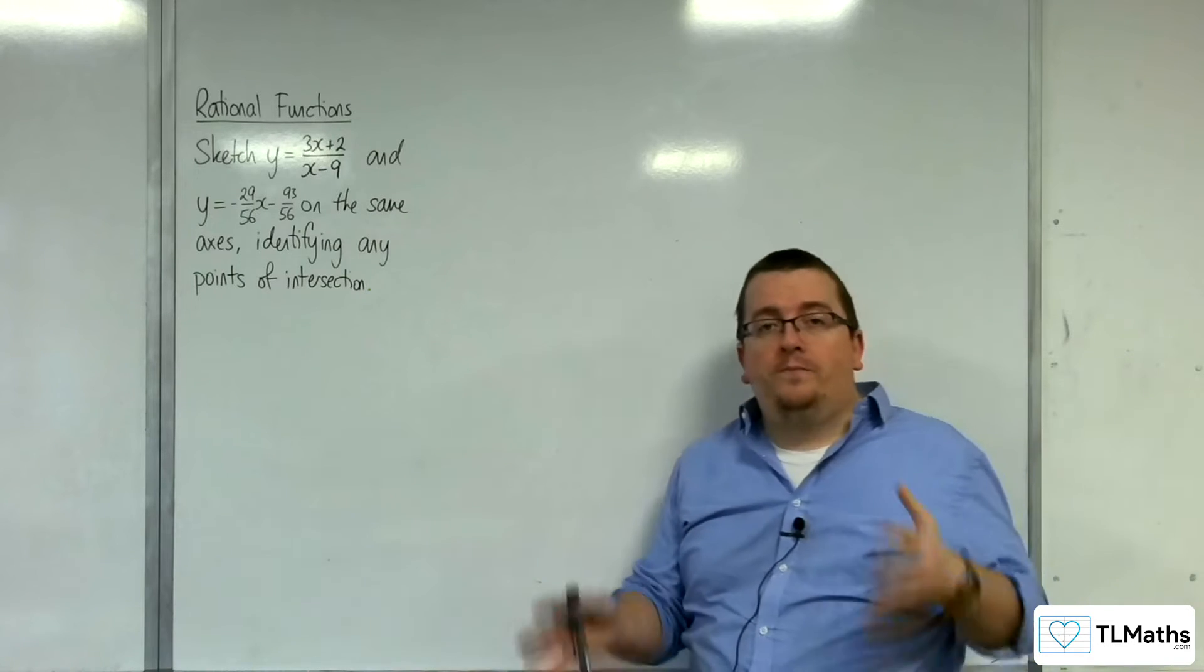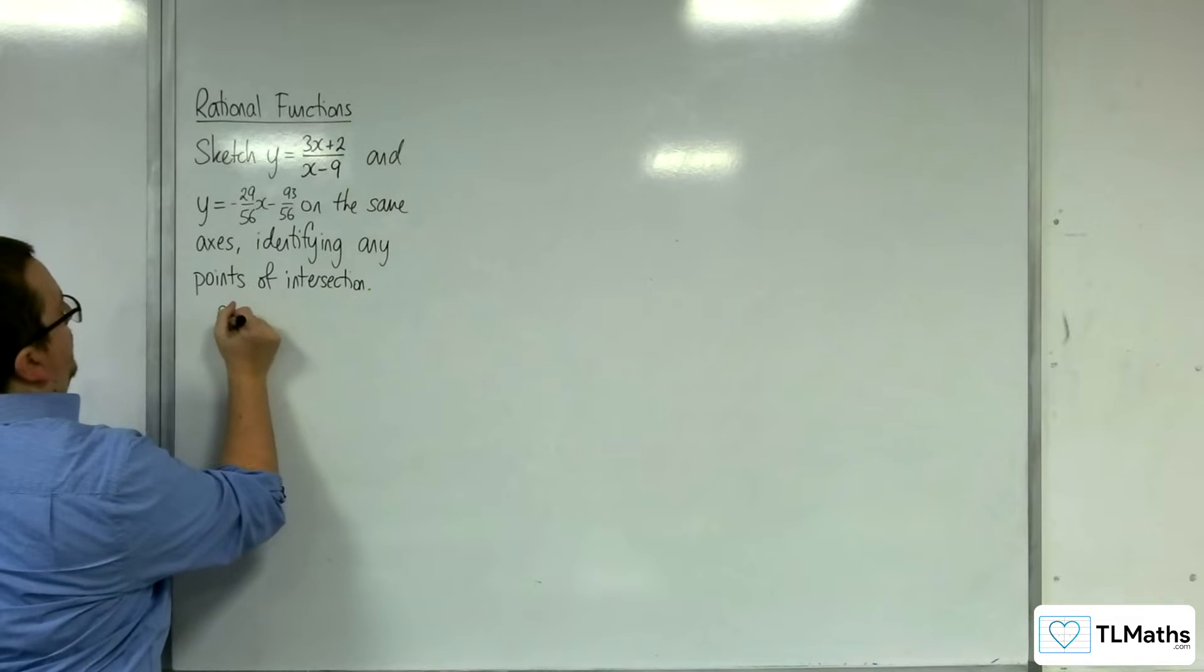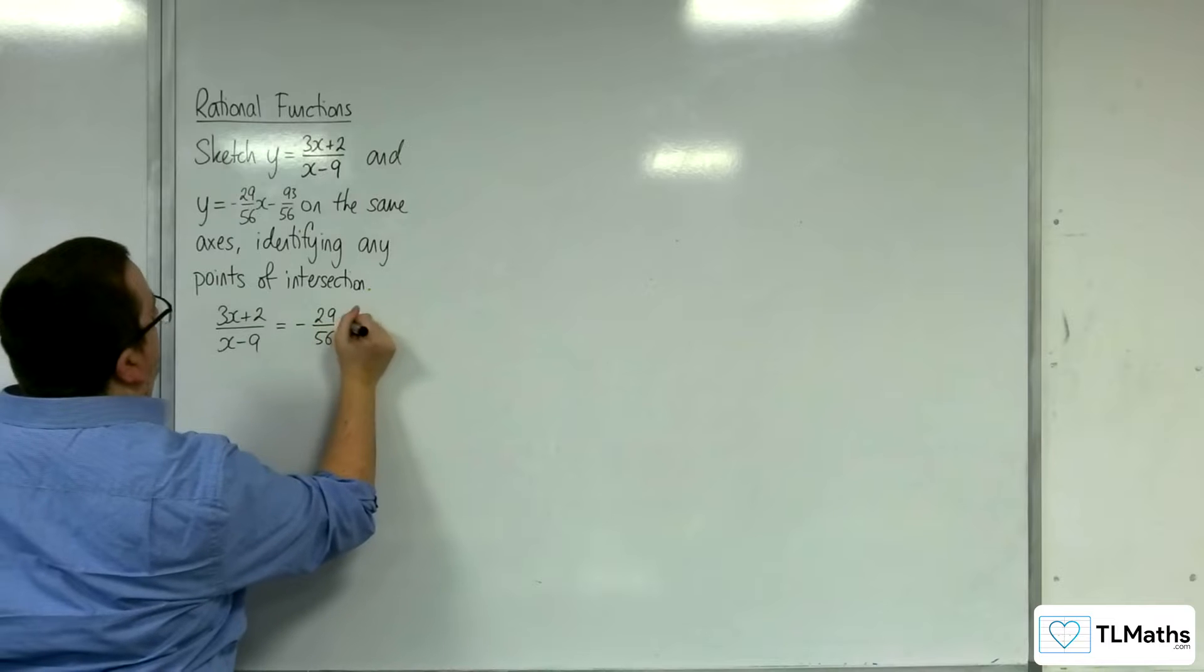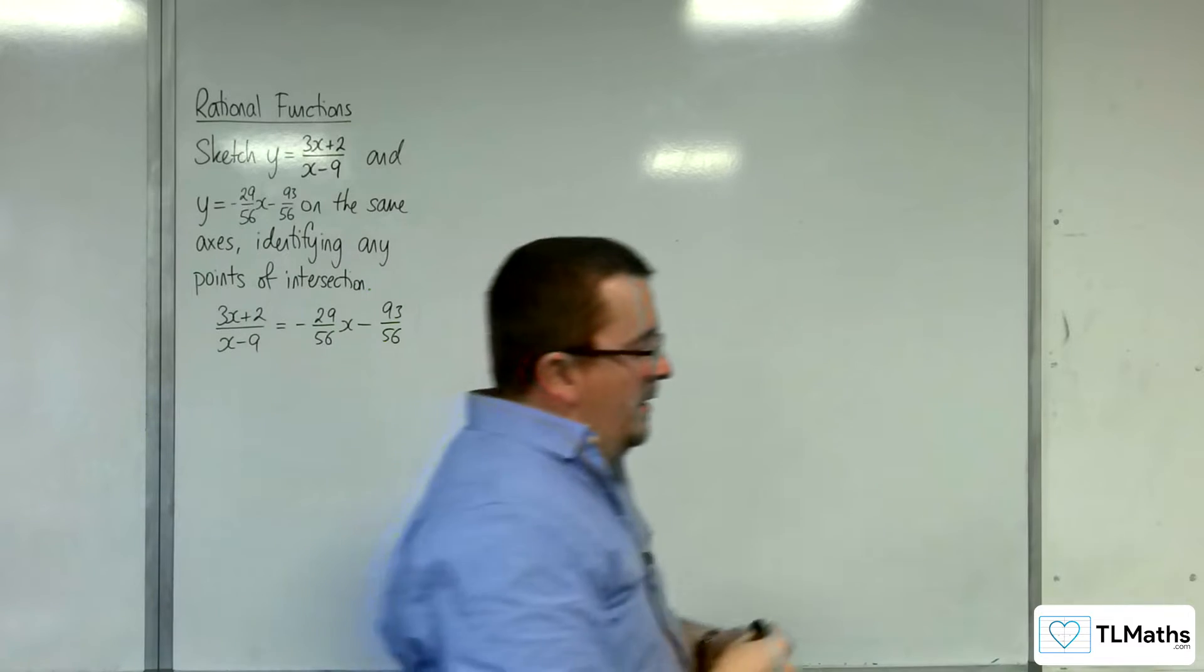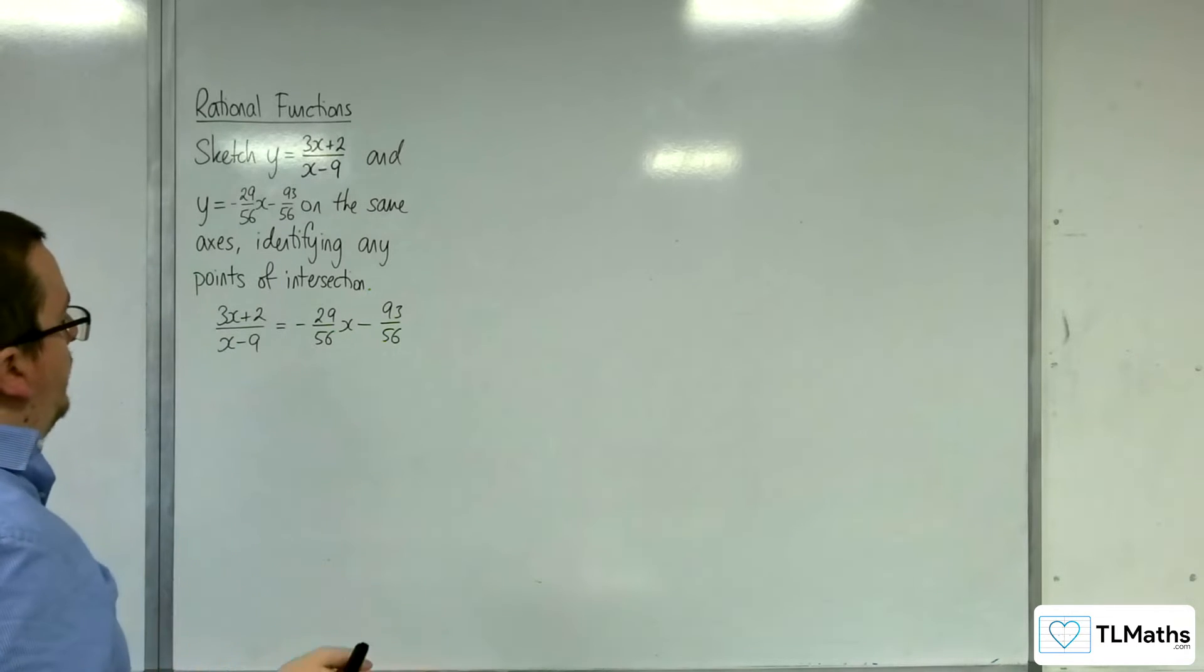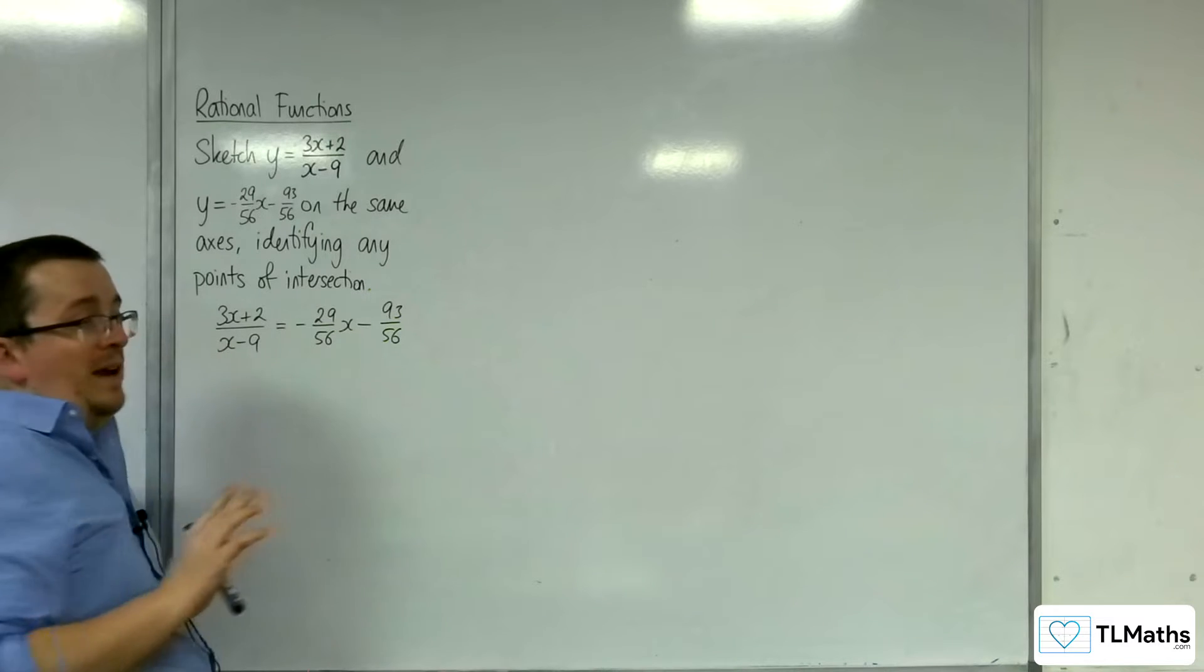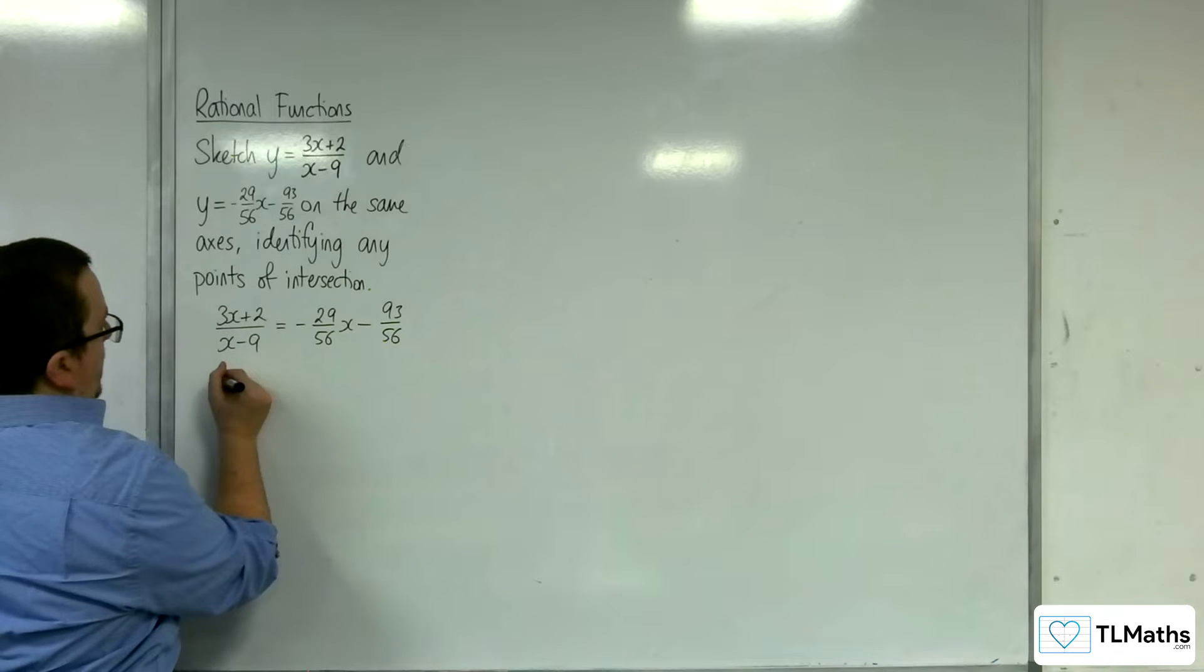So first thing to do, find where they intersect. So we're going to put 3x plus 2 over x minus 9 equal to minus 29 over 56x, take away 93 over 56. So this is a pretty horrific thing to want to be able to then expand brackets. So what I'm going to do first is I'm going to multiply through by minus 56, before I multiply both sides by x minus 9.